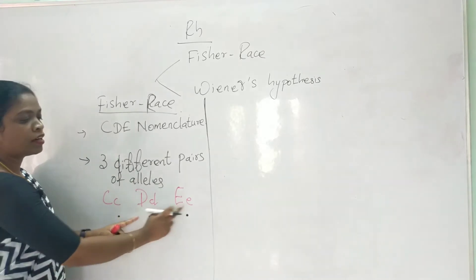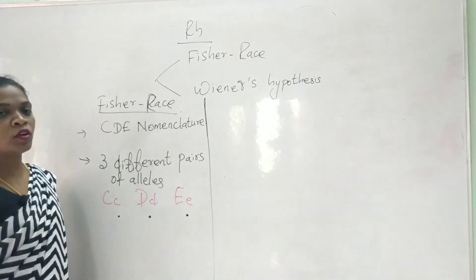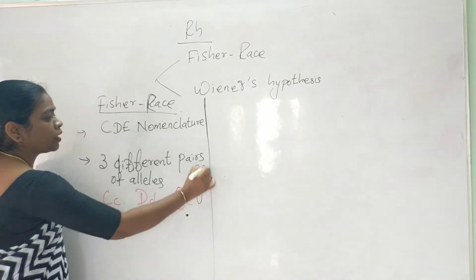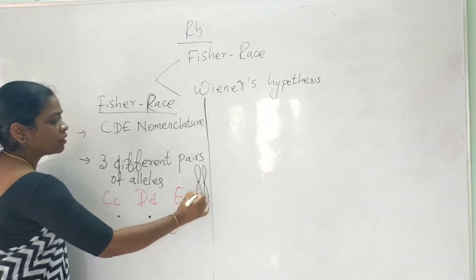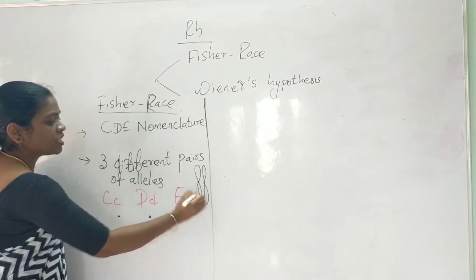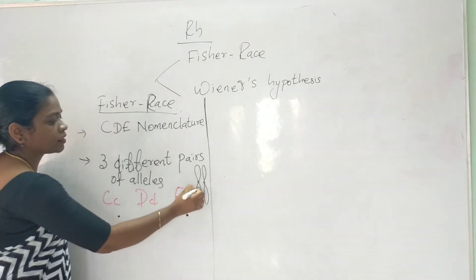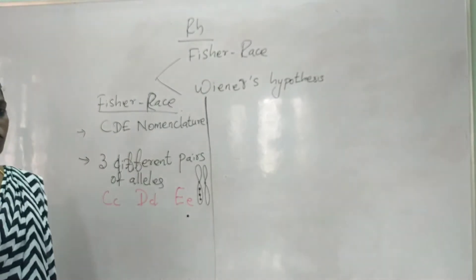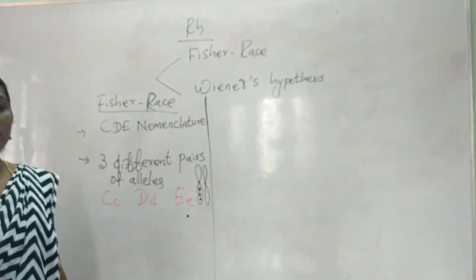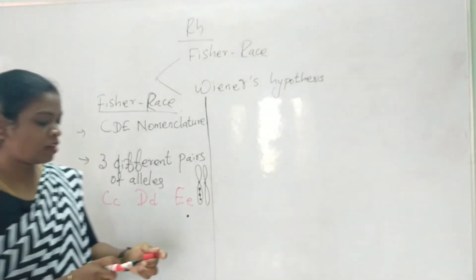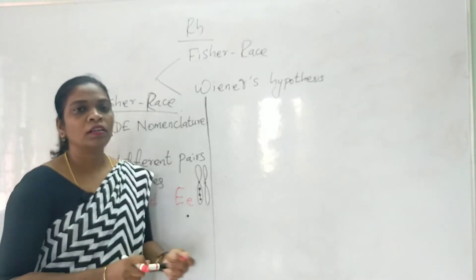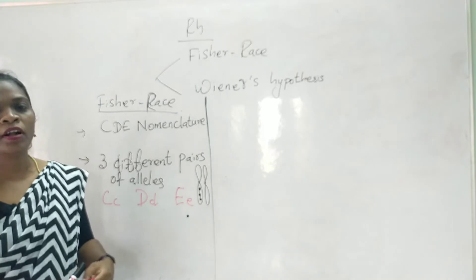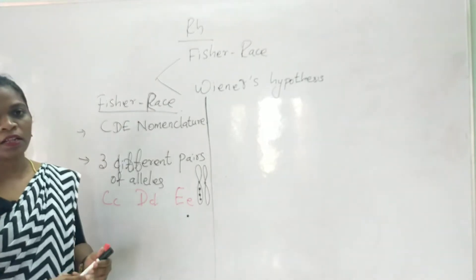These three pairs of alleles are arranged at three different loci in a homologous chromosome. A homologous chromosome is a pair of chromosomes. These three pairs of alleles are very closely linked, so even during crossing over we cannot divide them, because crossing over does not occur between them — they always remain linked together.